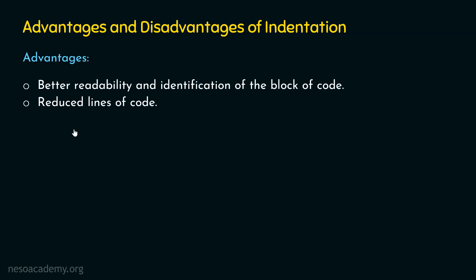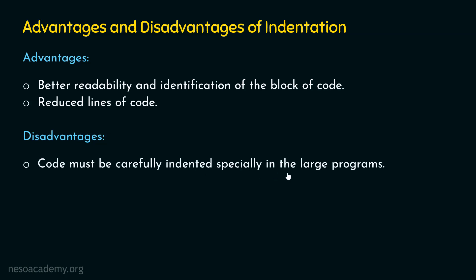Let's discuss some disadvantages as well. The first disadvantage is that code must be carefully indented, especially in large programs. It is important that indentation must be uniform throughout. Although with code editors like Visual Studio Code, we don't have to worry much about indentation. If we don't maintain uniformity, it will become difficult to read the code and it will not be considered valid code. So we need to avoid all the errors we have seen in this lecture.